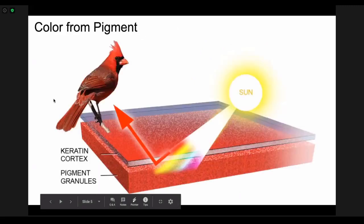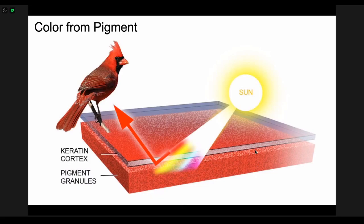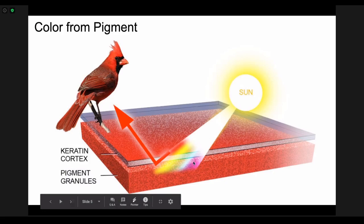So with birds, their feathers have some pigment granules and then that's covered by a keratin cortex. Keratin is the same type of material that your fingernails are made out of. We have white light from the sun coming in, all the different colors of the rainbow, they hit the pigment granules in the bird's feather and then all of the colors get absorbed except for red. The red gets reflected so that our bird looks red.